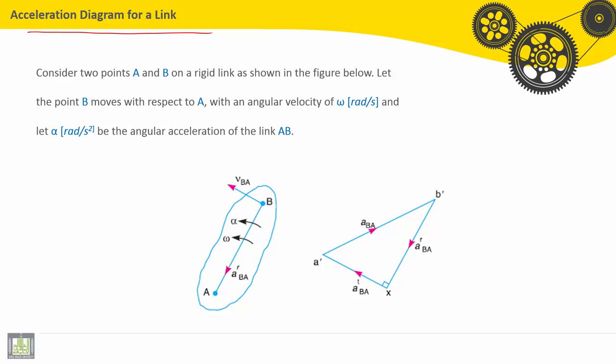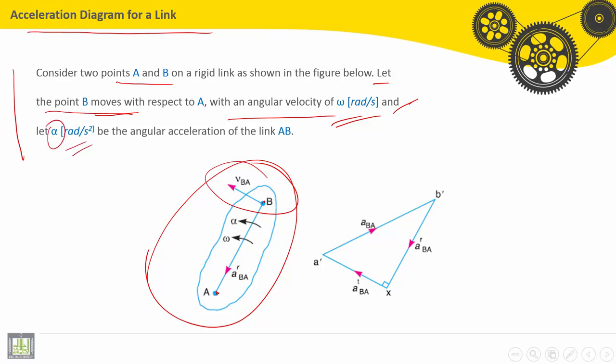Acceleration Diagram for a Link. Consider two points A and B on a rigid body, as shown in the figure below. Let the point B move with respect to A with an angular velocity omega in radian per second, and let alpha in radian per second squared be the angular acceleration of the link AB.